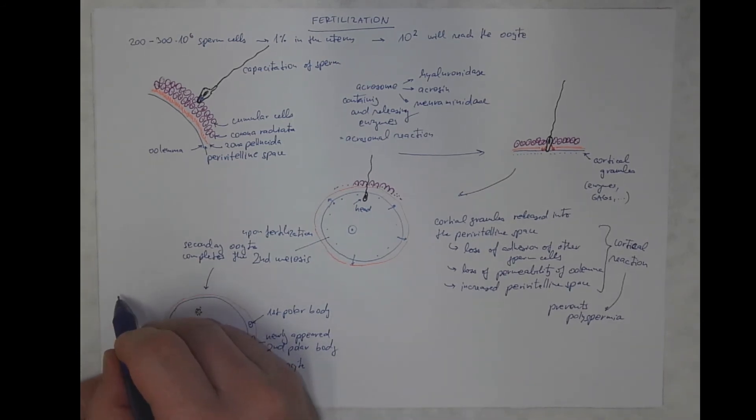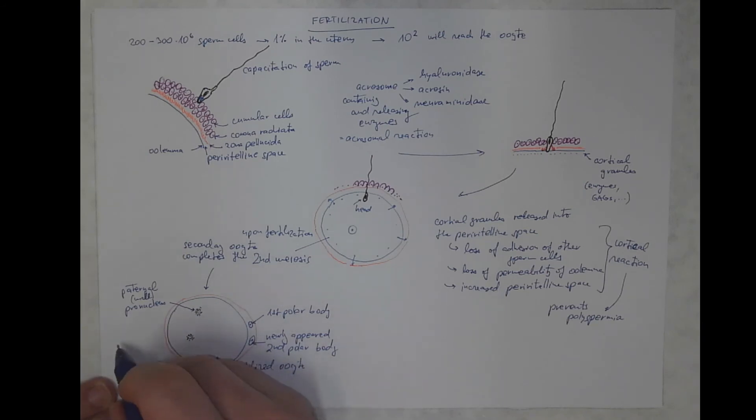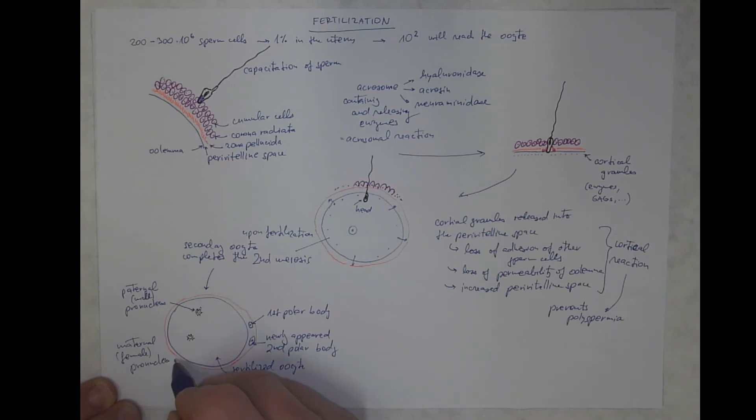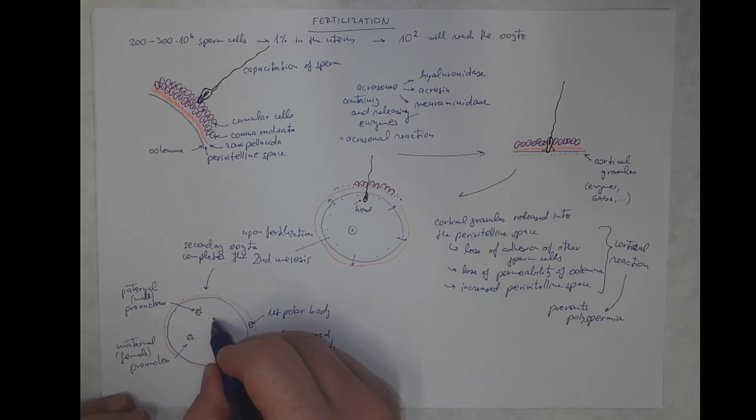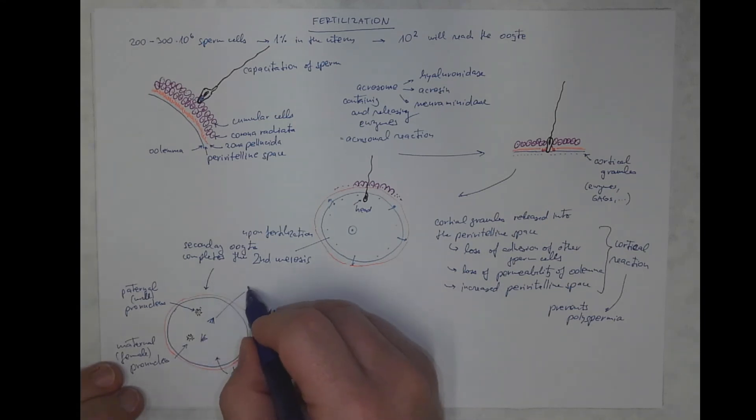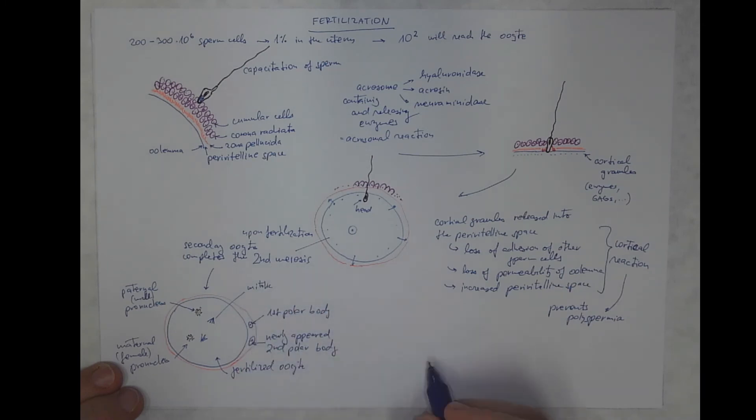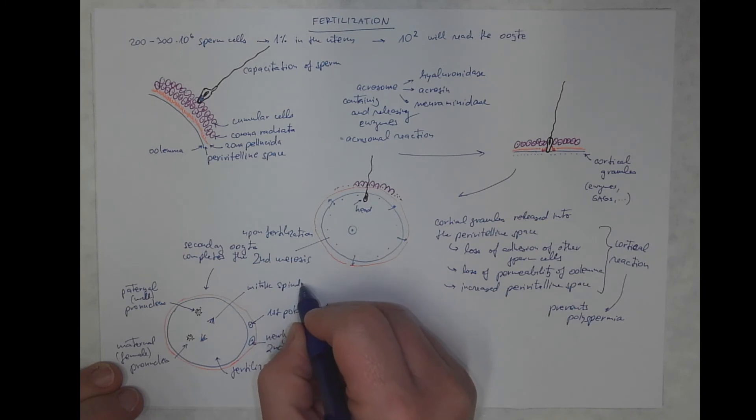And we got the paternal, I may call it male pronucleus, because the complete nucleus has not been completed yet, and we got the maternal or call it female pronucleus. There is also the mitotic spindle that will be organized here, preparing for the first mitotic division. Interesting point is that it comes from the centrioles of the sperm cells.